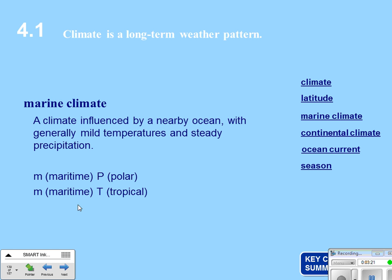A marine climate is a climate influenced by a nearby ocean, generally with mild temperatures and steady precipitation. Abbreviations to know: M stands for maritime — maritime and marine are very similar, meaning water. P is for polar, meaning cold. T is for tropical, meaning warm.